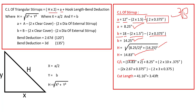The cut length = h×2 + a, so 14.83×2 + 8.25, plus two hooks (2×10×0.375), minus 2 bends at 120 degrees (2×2.67×0.375) and 2 bends at 135 degrees (2×3×0.375). The cut length of this triangular stirrup = 41.16 inch, which equals 3.43 feet.